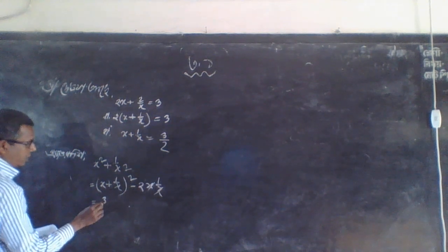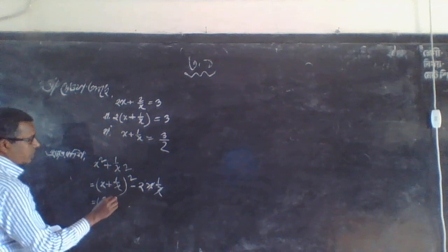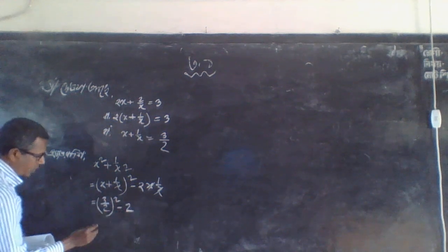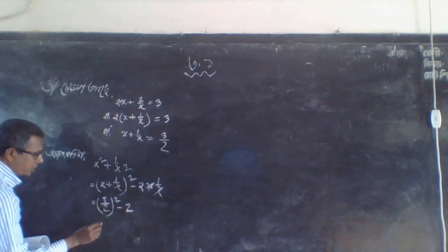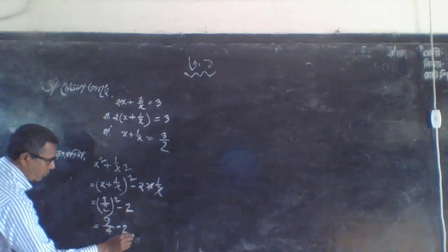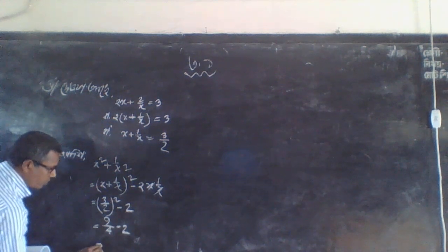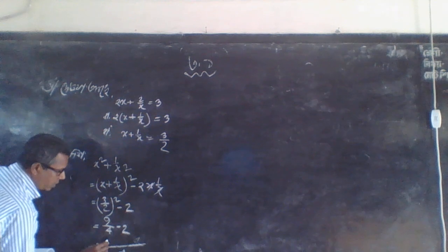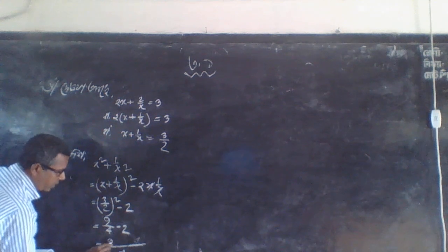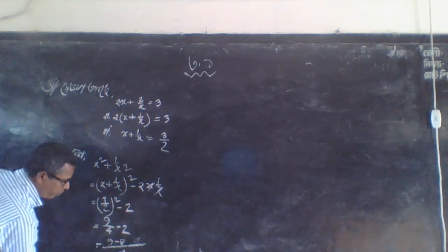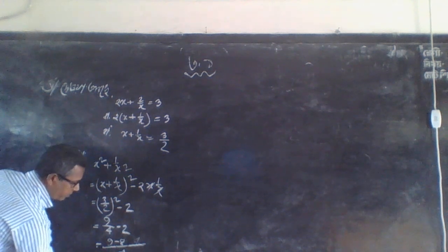3 by 2, whole square minus 2. That gives us 4 minus 2, which is 8 minus 4, so 8 by 4 — the answer is 8.